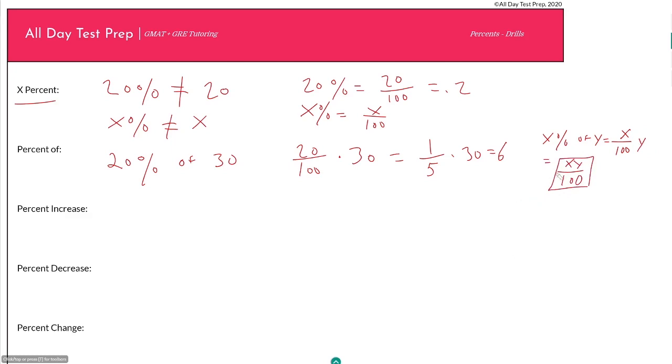If I was to say what is x percent of y percent, what would that be? That would just be x over 100 times y over 100, which is equal to xy over 10,000, because 100 times 100 is 10,000.